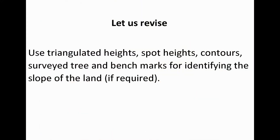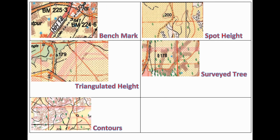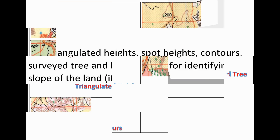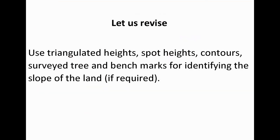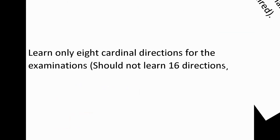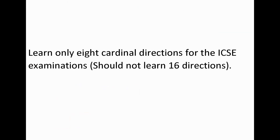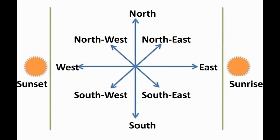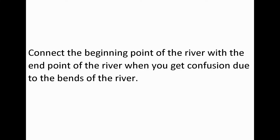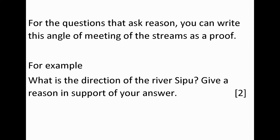Let us revise. Use triangulated heights, spot heights, contours, surveyed trees, and benchmarks for identifying the slope of the land if required. Learn only the 8 cardinal directions for the ICSE examinations — do not learn 16 directions. Connect the beginning point of the river with the end point when you get confused due to bends. For questions that ask for a reason, you can write the angle of meeting of the streams as proof.